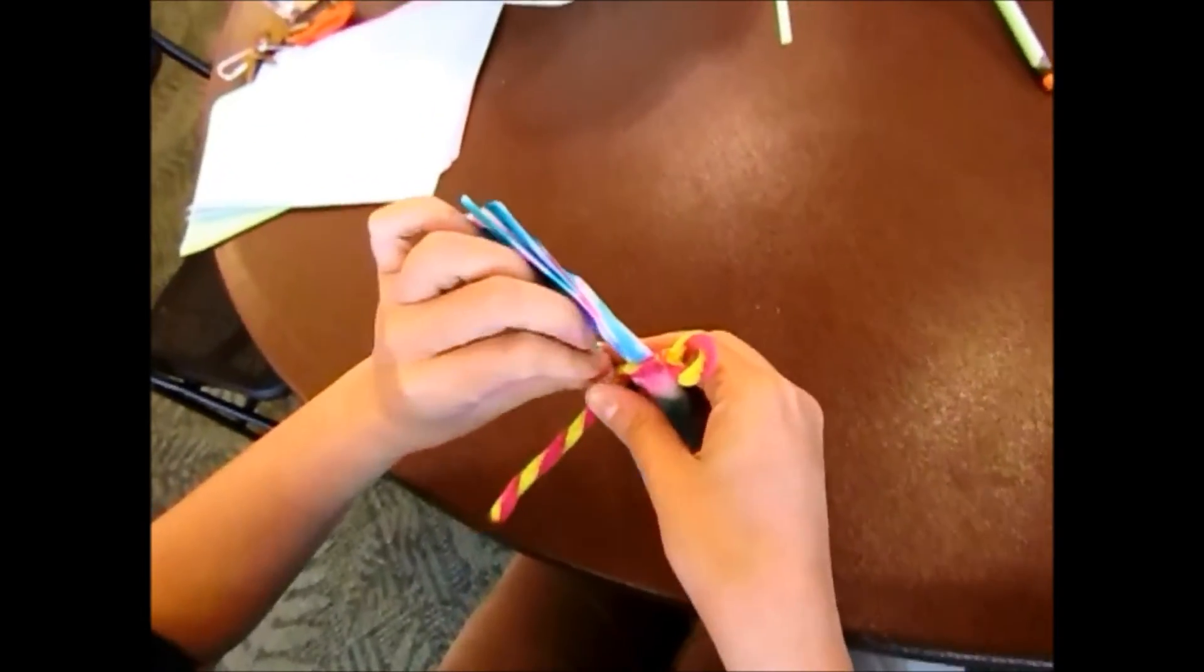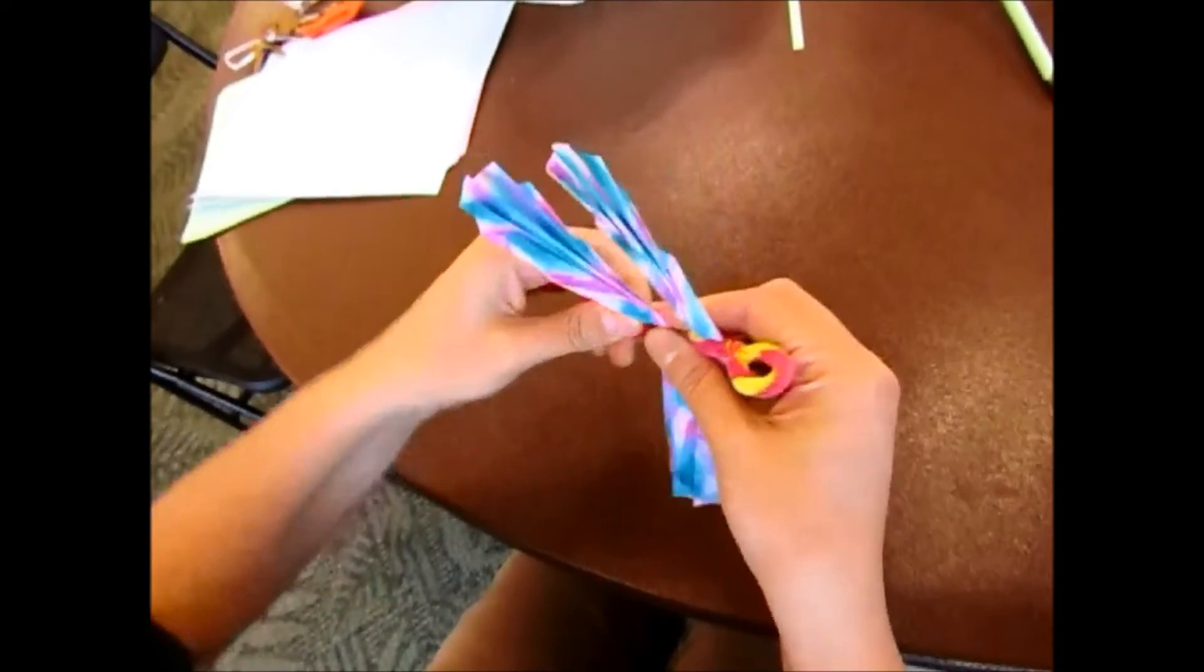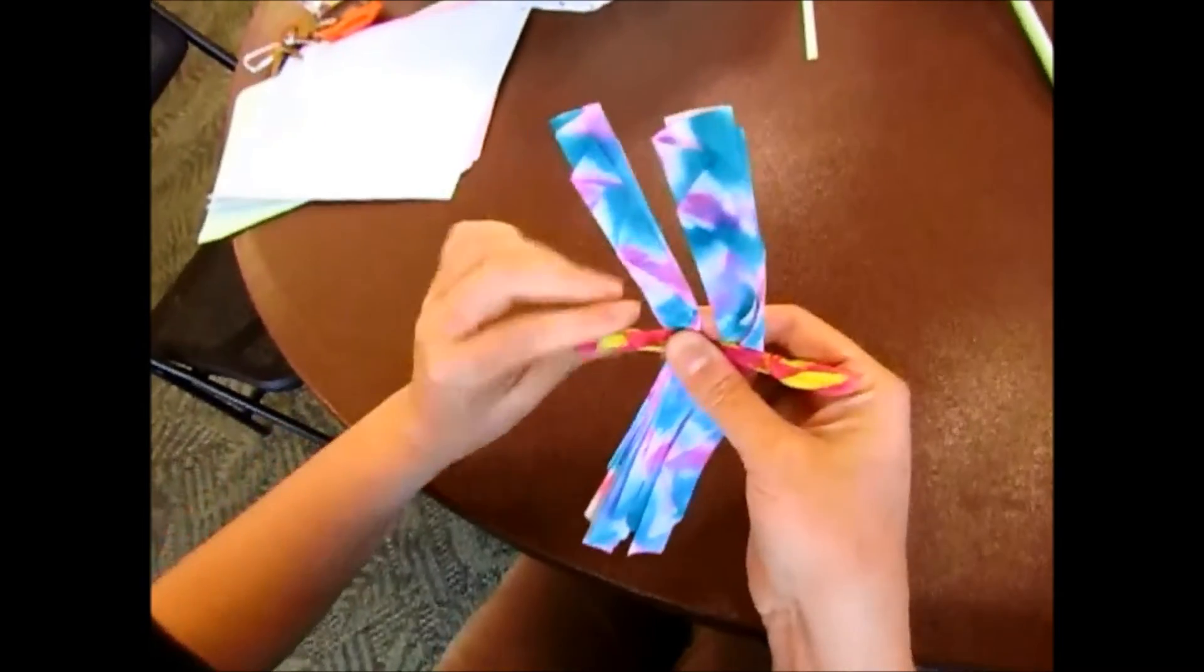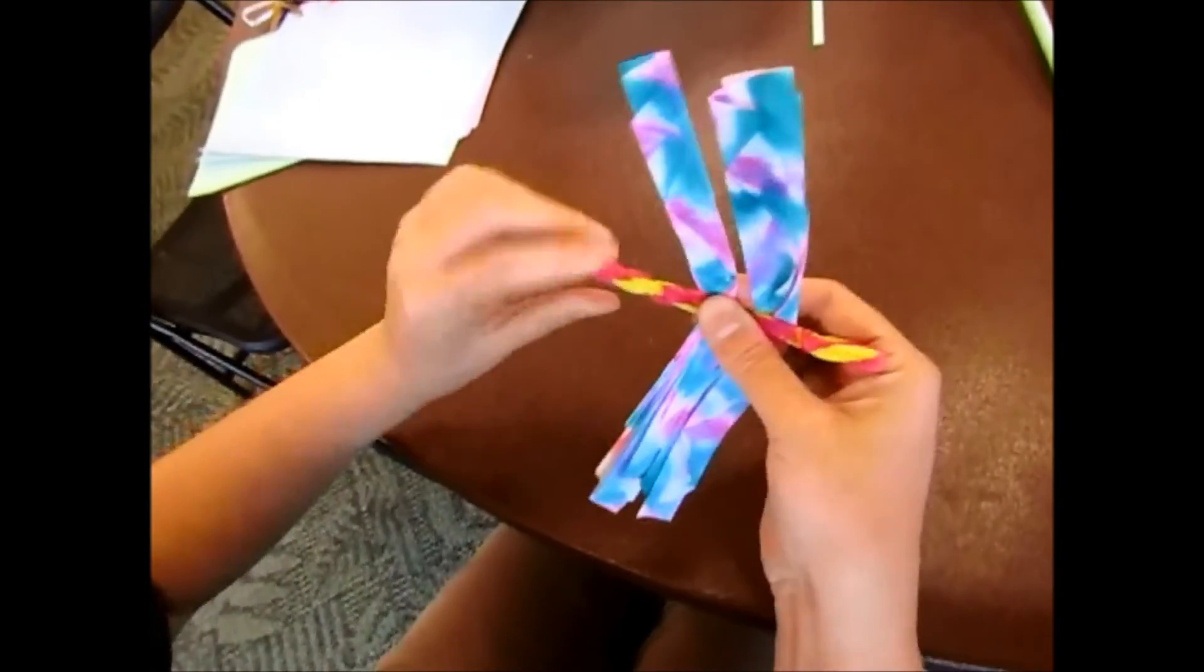Twist that all the way to the end so it's nice and tight. Now you have your wings attached, so all you have to do is spread out your wings to get them nice and pretty.